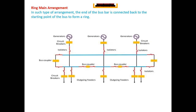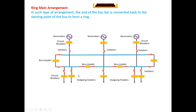Another arrangement is the ring bus bar scheme. Similar to a ring main system, it forms a closed ring, ensuring continuity of power supply — unlike a radial system where discontinuity can occur. In the ring bus arrangement, the end of the bus bar is connected back to the starting point to form a ring. Through a bus coupler, the ring path is completed. It is also known as a mesh type bus scheme.